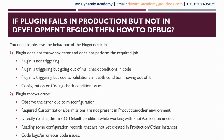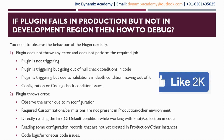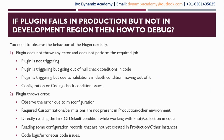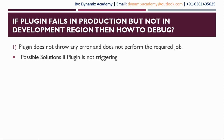Another situation is when you are trying to retrieve a configuration record and those records have not yet been created in the production environment — those lines of code will fail in your plugin. Whenever the plugin is throwing an error, it generally indicates a code logic issue or erroneous code has been written in the plugin. So in this kind of situation your plugin might fail. Let us now see the possible solutions for both cases.